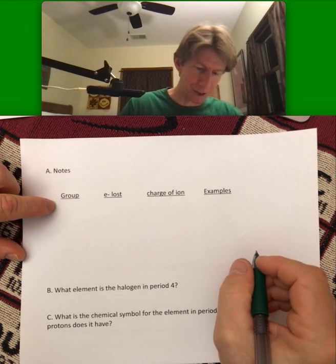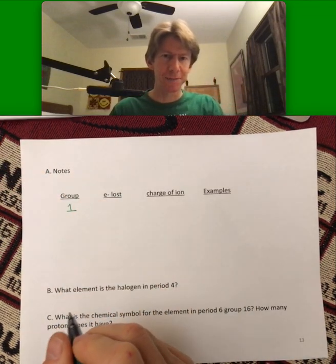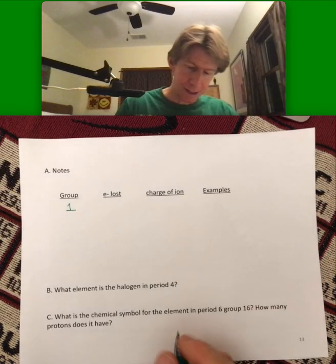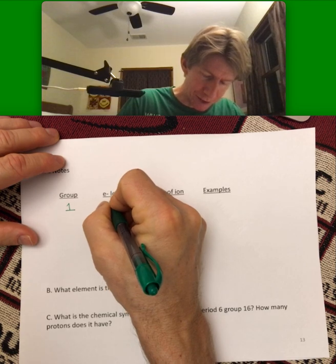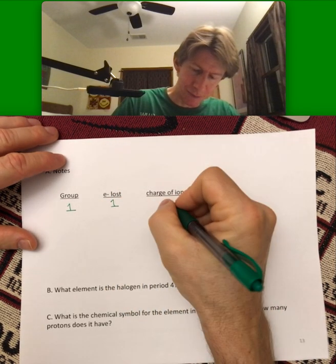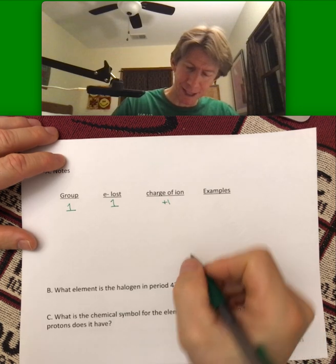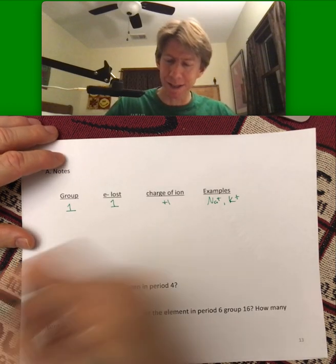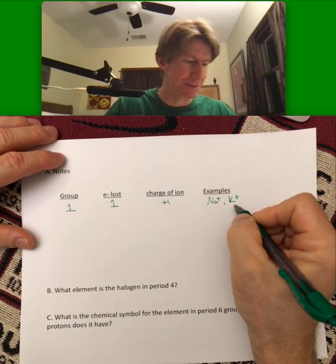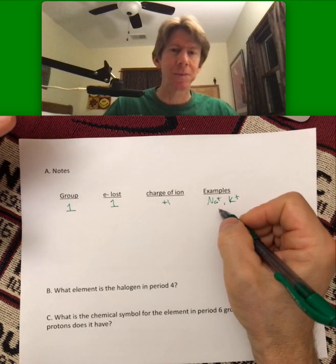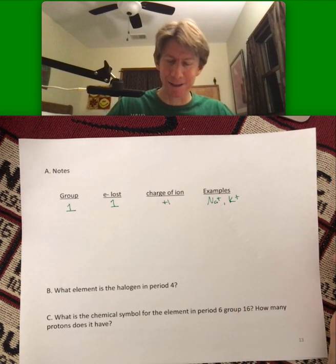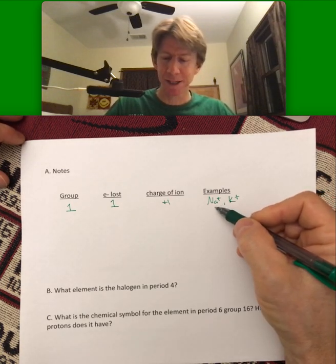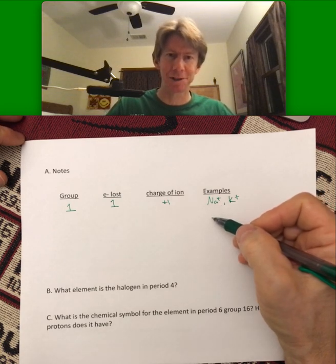So group one. Group one, what you'll remember, is the alkali metals. They lose one electron, and the charge of the ion is plus one. Examples are going to be sodium, potassium, plus. And you'll remember that these are on your nomenclature list. Anything that can help you remember the charges of your ions is helpful, because you also have to memorize sodium as the element. The sodium ion, the only difference is it has a plus charge.